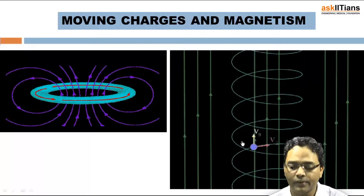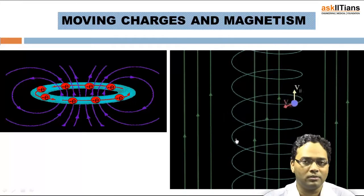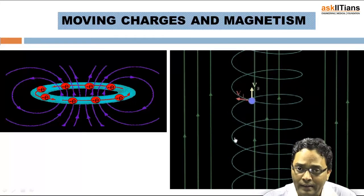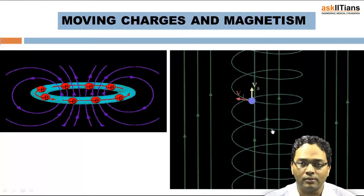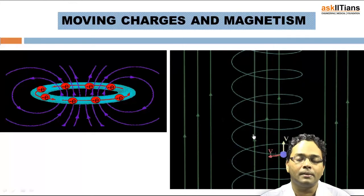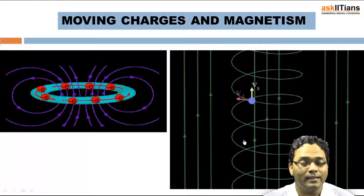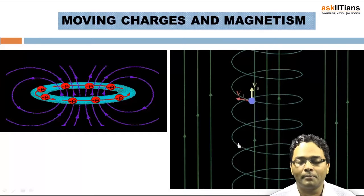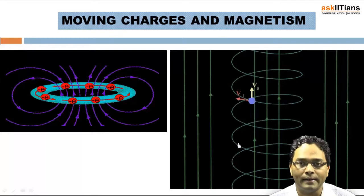For instance, if we talk about the motion of an electron about the nucleus of an atom — if the motion is circular, or if there is a perpendicular field acting, that is going to result in a helical path. So let's understand what exactly are the types of motion produced in the presence of a magnetic field.